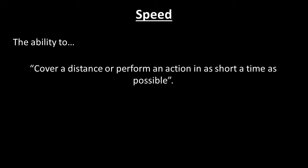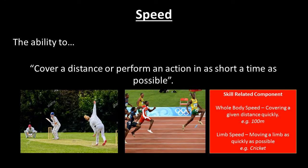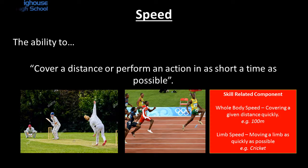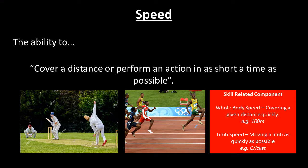Speed can be subdivided into two sections. Speed is the ability to cover a distance or perform a singular action in as short a time as possible. Whole body speed — covering a given distance quickly, be it 100 metres, 200 metres, running in football or rugby — is what most of us understand. However, limb speed is equally important, referring to moving a limb as quickly as possible to gain an advantage. In cricket, the bowler generates as much speed as possible in his arm to release the ball quickly, and equally the batsman must generate arm speed to hit the ball as far as possible. It's important to understand the difference between whole body speed and limb speed.